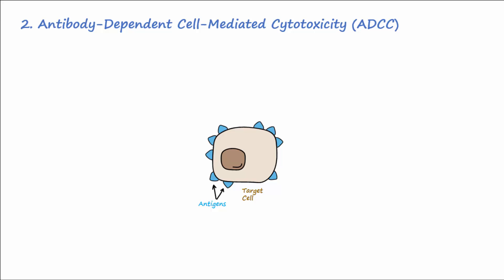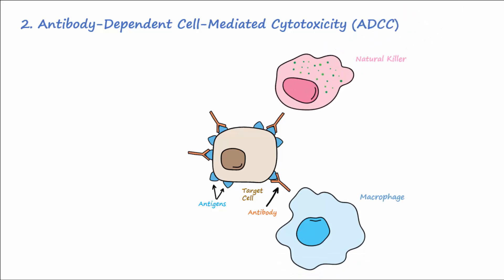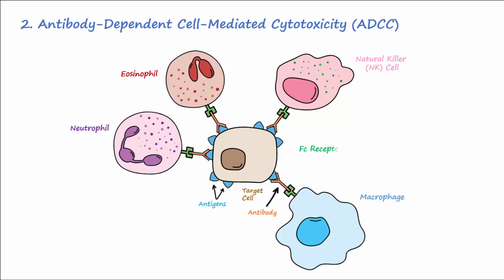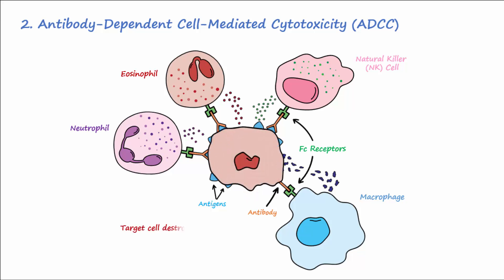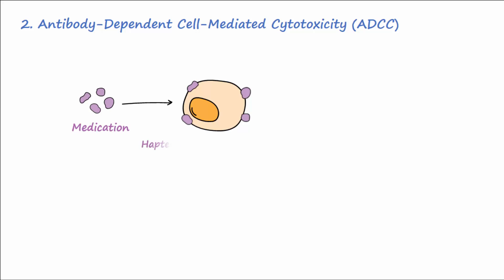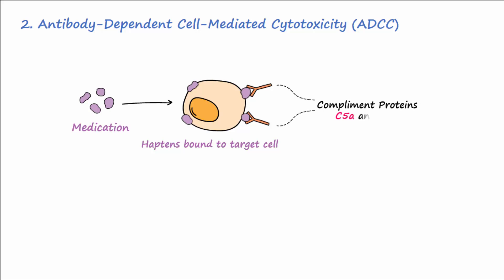The second mechanism, known as ADCC, involves antibodies that bind to antigens on target cells. These cells are then recognized by immune cells like macrophages, natural killer cells, eosinophils, and neutrophils using Fc receptors. Once bound to an antibody, these cells can release toxic substances or granules onto the target cell, causing it to die. ADCC is involved when certain medications act as haptens and bind to cells of a certain tissue. When antibodies bind to these body cells, they can activate complement proteins C5a and C3a, which attract white blood cells to the site and carry out ADCC.